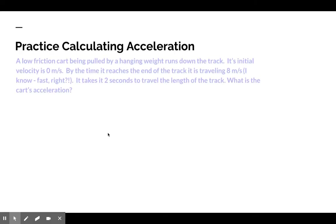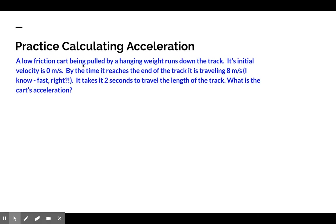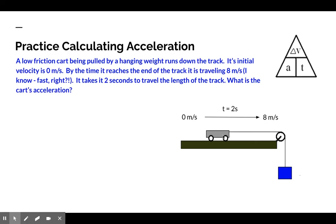Practicing calculating acceleration. Here is our problem. A low friction cart being pulled by a hanging weight runs down a track. Its initial velocity is zero. By the time it reaches the end of the track, it's traveling eight meters per second. I know that's fast, right? Think about it. Eight meters pretty far in one second. It takes two seconds for it to travel the length of the track. What is the cart's acceleration? I'm going to give you the triangle. Velocity final minus velocity initial is going to be how we calculate change in velocity over time. I'll show you a picture of the cart so you understand the problem. I have this little low friction cart being pulled by this weight around this pulley down this track. It's changing its velocity. It starts at zero meters per second, ends at eight meters per second, and it travels this distance in two seconds. Pause the video now and give this problem a try.